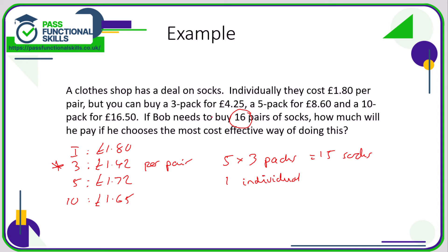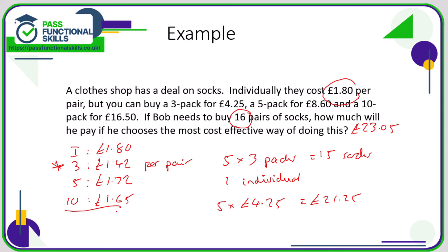Five three-packs cost five times £4.25, which comes to £21.25. Then add one individual pair at £1.80, giving a grand total of £23.05. If you instead bought a ten-pack (£16.50), a five-pack, and an individual pair, or three five-packs and an individual pair, it would come to more than £23.05 — so that's not the most cost-effective way. The key is to find the best offer and take advantage of it as many times as possible.